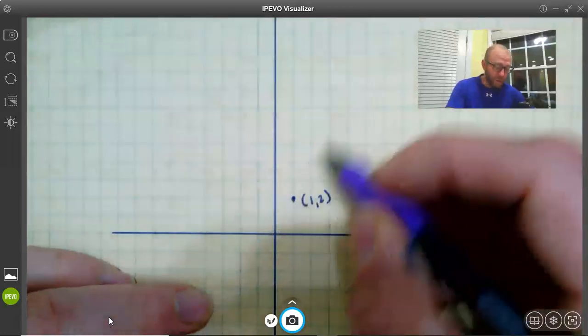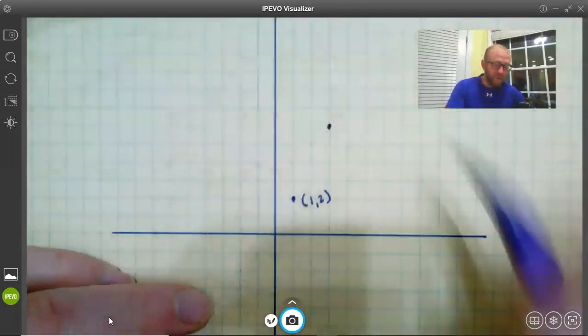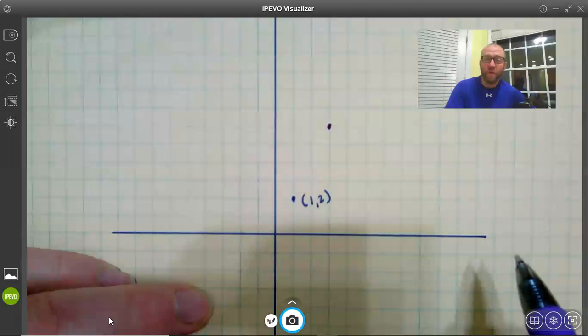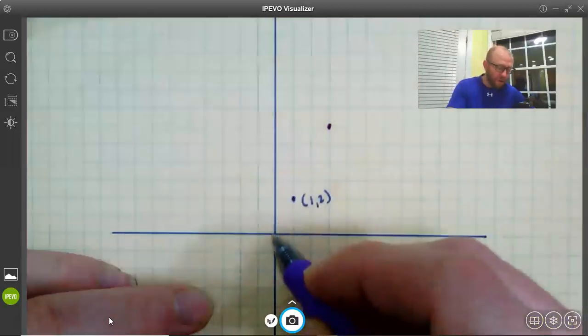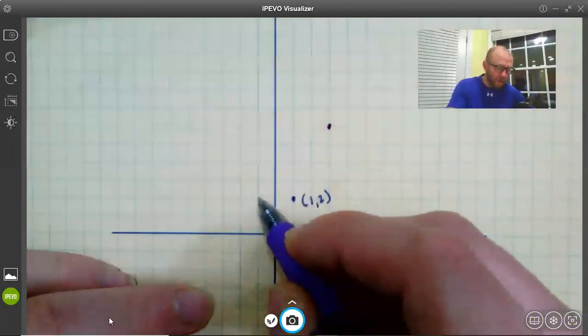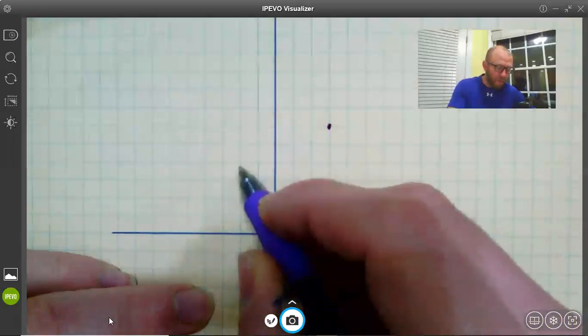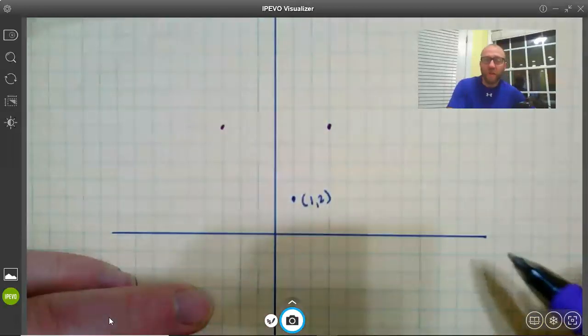So up here, up here. There's a point that is three times as far away. I could go in the other direction as well. I could go, say, over 1, up 2, over 1, up 2, over 1, up 2. There's another point over there.